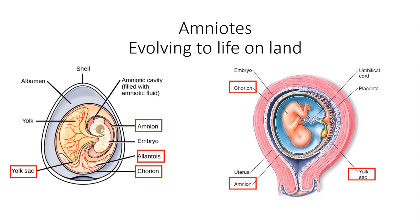Here we can also see them in a chicken egg — the amnion, the allantois, and the chorion — and they each have different functions.